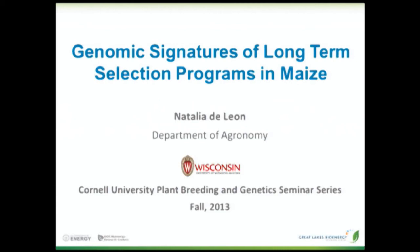If you wanted to hear about any of that, find me at the end of the seminar. What I wanted to talk about is another area of research we are developing in our group, which is looking at breeding populations that have been selected for a relatively long period of time, and thinking about those populations as examples of accelerated evolution — how we can look at changes in allele frequency, changes in recombination and diversity, and look at those as potential signatures from selection.